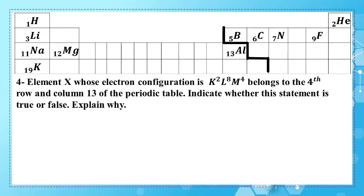In part four, an element X whose electron configuration is K2, L8, M4 belongs to the fourth row and column 13 of the periodic table. Indicate whether this statement is true or false and explain why.